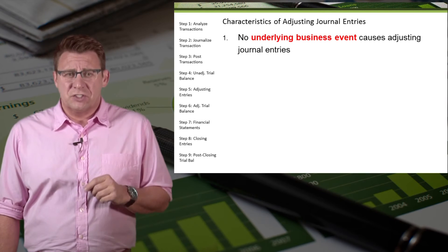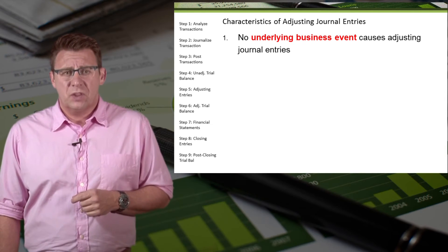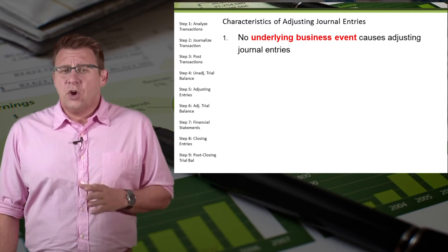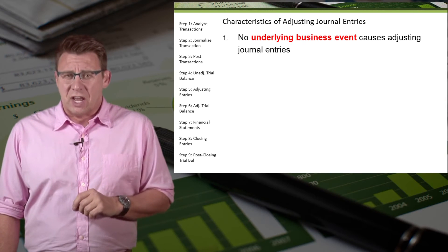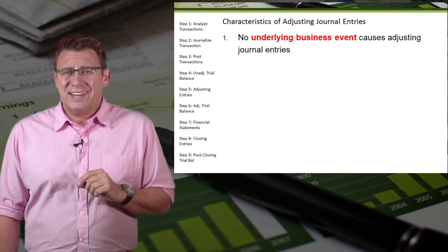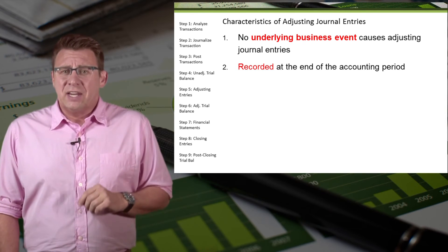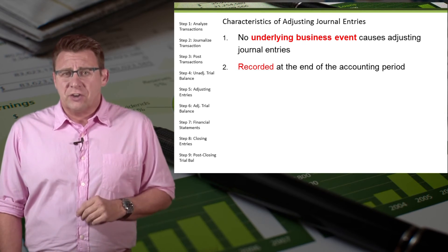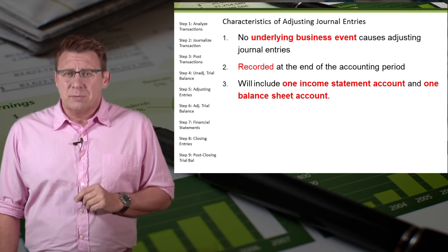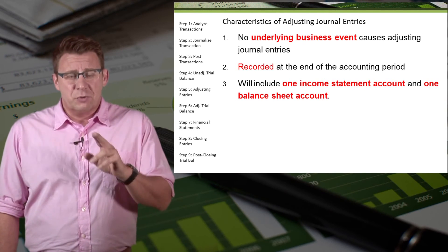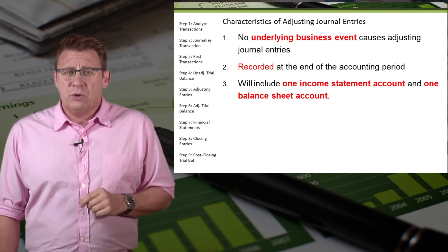Let's look at some characteristics of adjusting journal entries and how they differ from regular journal entries made in the ordinary course of business. First, there is no underlying business event that causes an adjusting entry — they happen most often because of the passage of time or because information isn't available in the period in which we need it. They are recorded at the end of an accounting period, so adjusting journal entries will be dated at the end of the month. They will always include one income statement account and one balance sheet account, which you can usually figure out if you remember that.